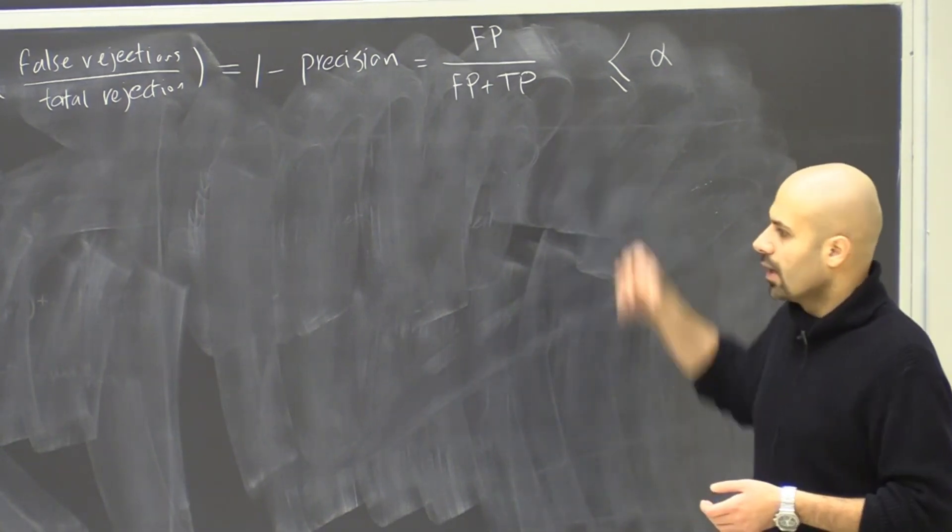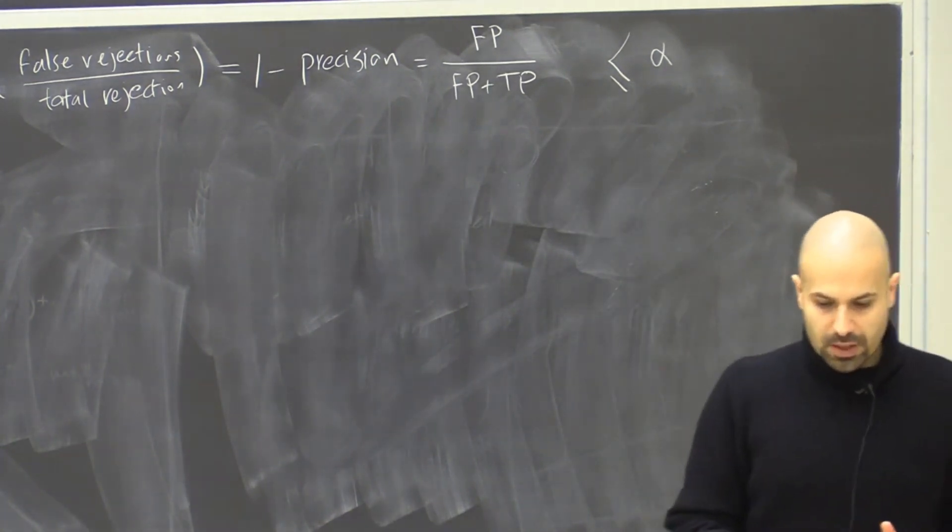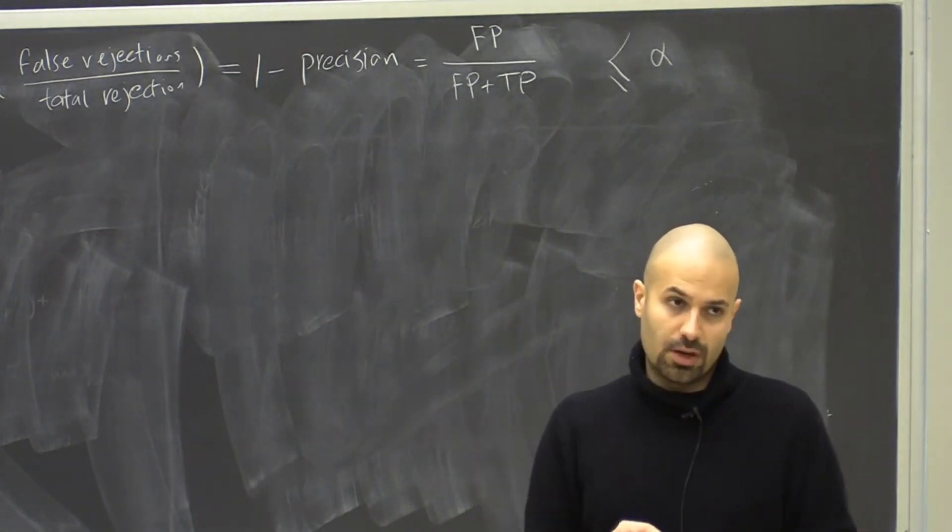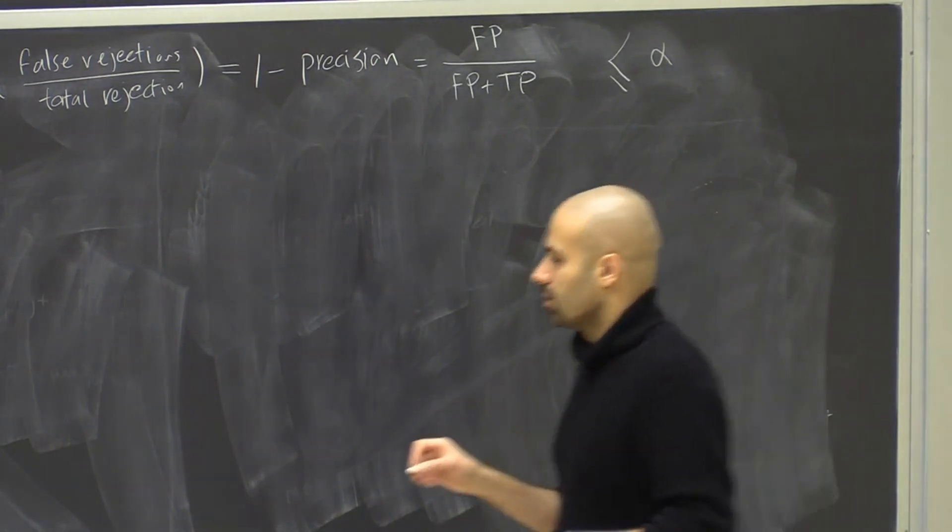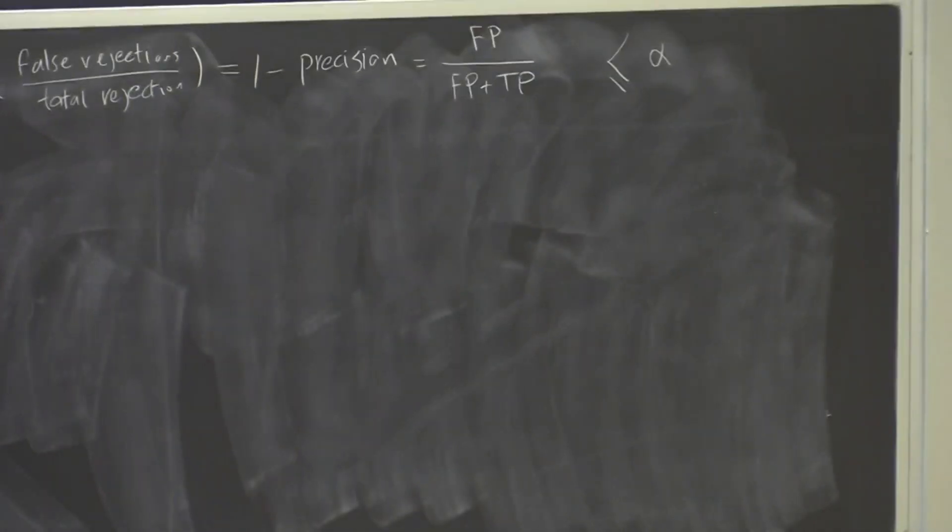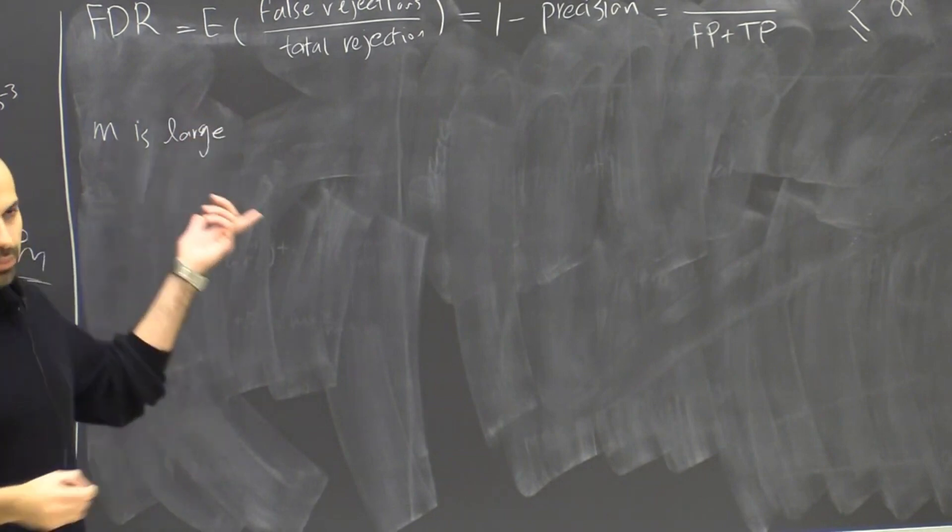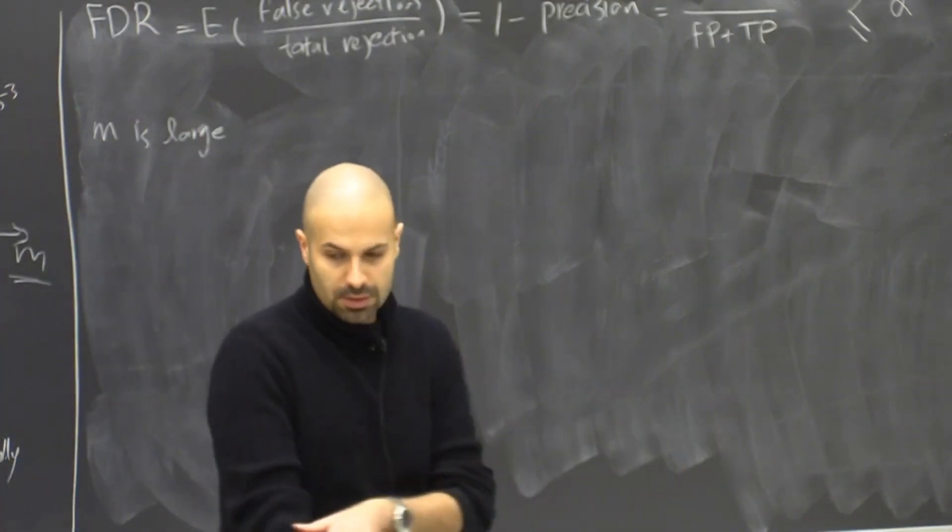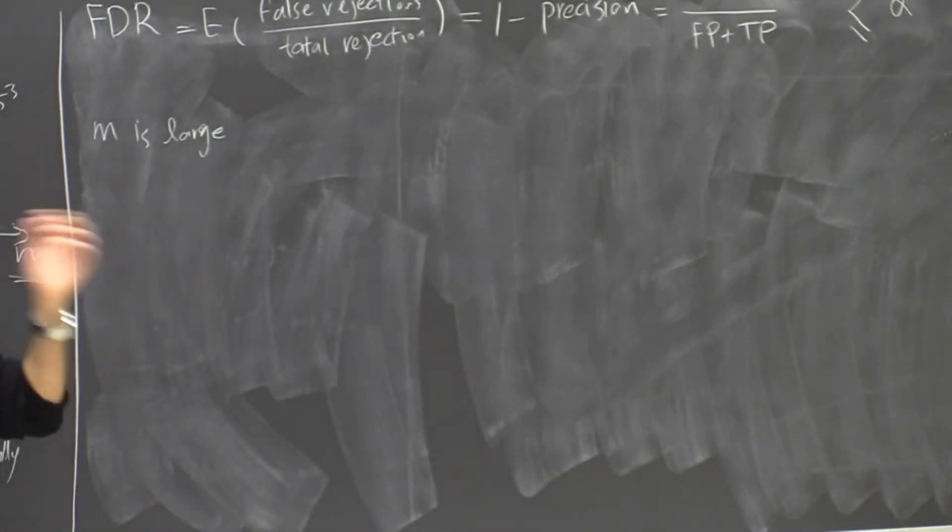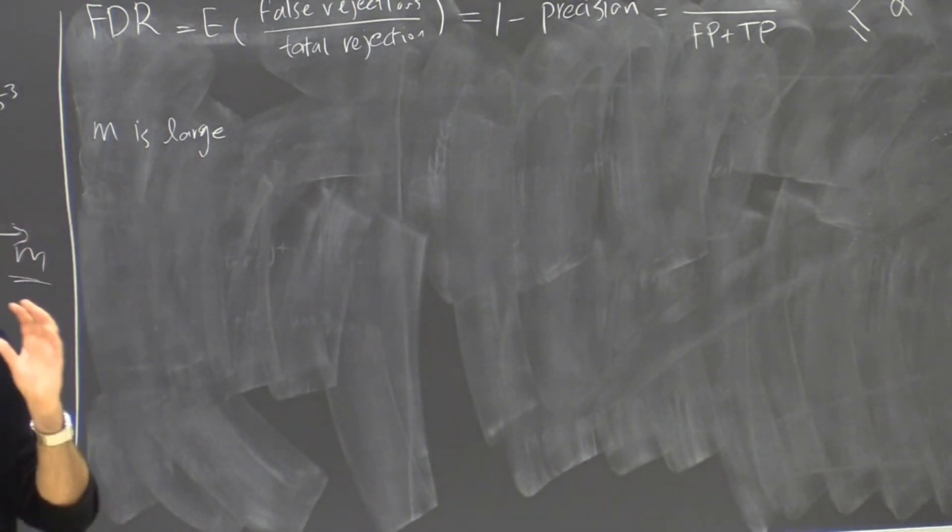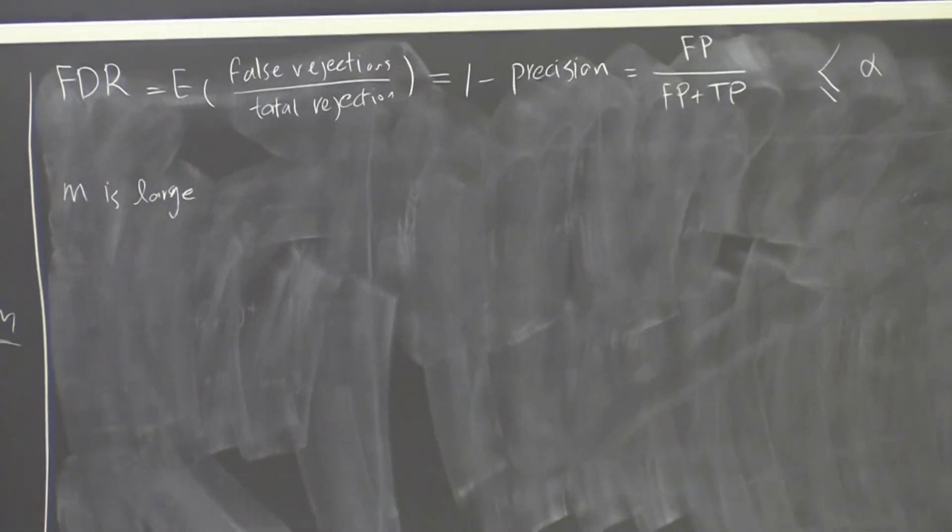Here we are being less conservative because the purpose of these tests are different. False discovery rate is suitable for cases where M is large. When M is large, this idea of family-wise error rate, which is probability of not having any type 1 error, is just too much to ask.